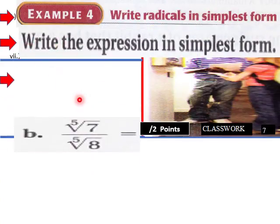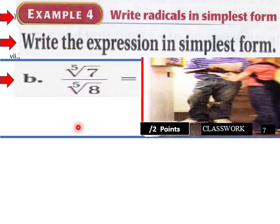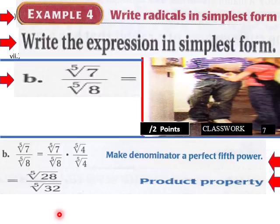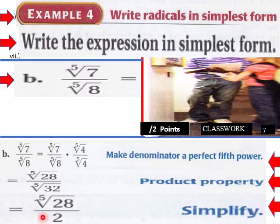Write radicals in simplest form. We have this situation here: the fifth root of seven over the fifth root of eight. We can make a denominator a perfect fifth power to rationalize our denominator. 32 does have a perfect fifth root. So the fifth root of 32 over the fifth root of 28, and that'd be the fifth root of 28 over two. That'd be a way of rationalizing our denominator without a calculator.